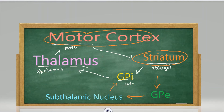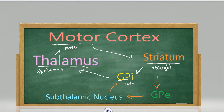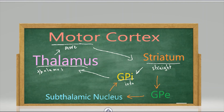The mnemonic for the indirect pathway is: 'move straight' — then there's a pause because he gets confused and says 'exciting stuff' — and then 'into thalamus.' So for the direct pathway: 'move straight into thalamus.' For the indirect pathway: 'move straight, exciting stuff, into thalamus.' That's it for the indirect and direct pathways.